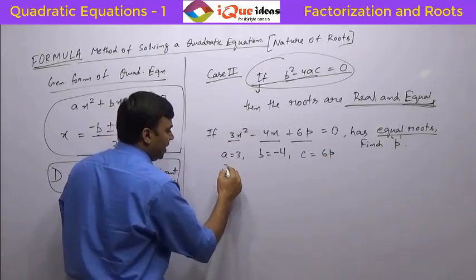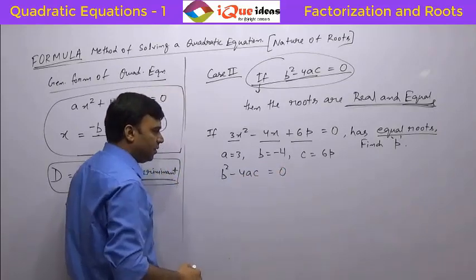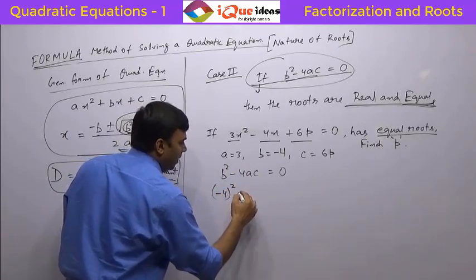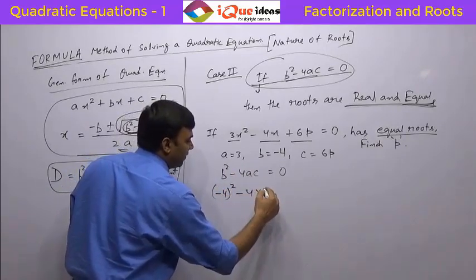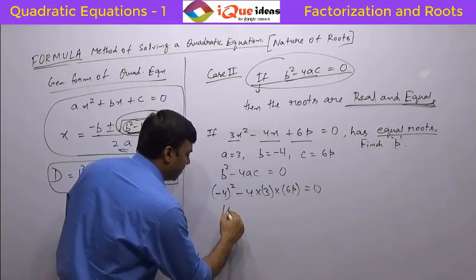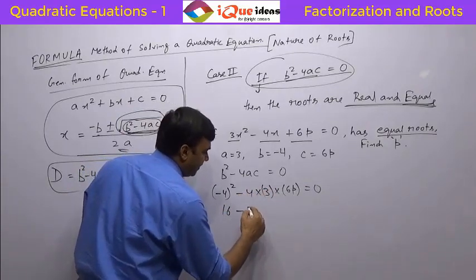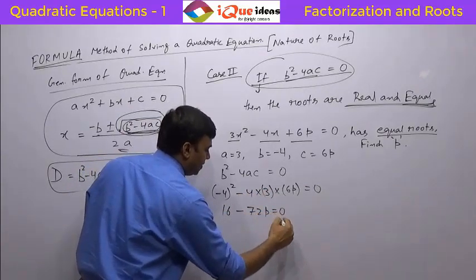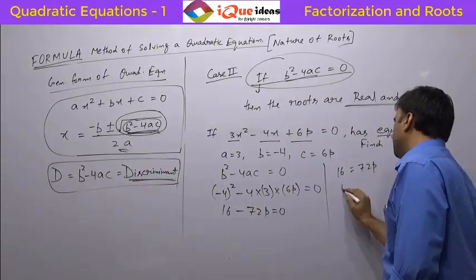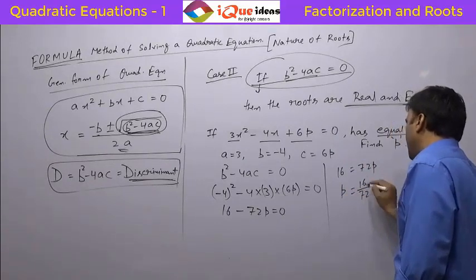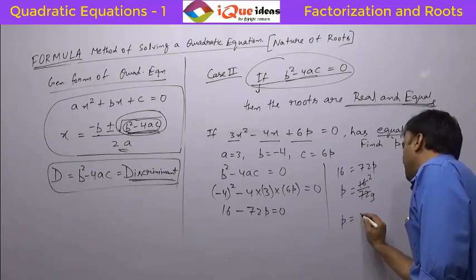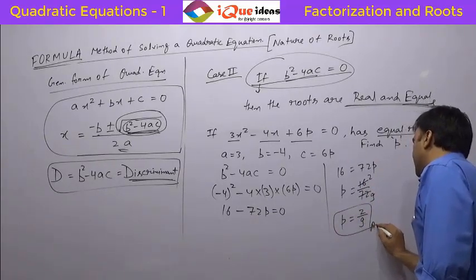Now the condition is b squared minus 4ac should be equal to 0. We put the values: in place of b, minus 4 whole square, minus 4 into 3 into 6p, equals 0. So it is 16 minus 72p equal to 0. Solving, we get 16 equal to 72p, that means p is equal to 16 divided by 72, which simplifies to 2 by 9. So the value of p in this question is 2 by 9.